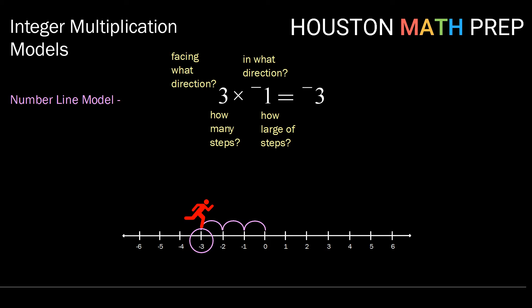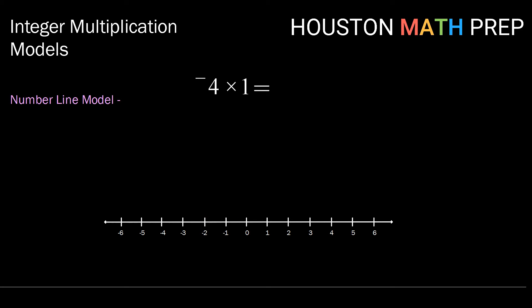Let's try another example: negative 4 times 1. Our negative says we're going to face towards the negatives, or face left. So there's our little creature facing left. The 4 says we're going to take 4 steps. Because our second value is positive, we take forward steps of size 1.